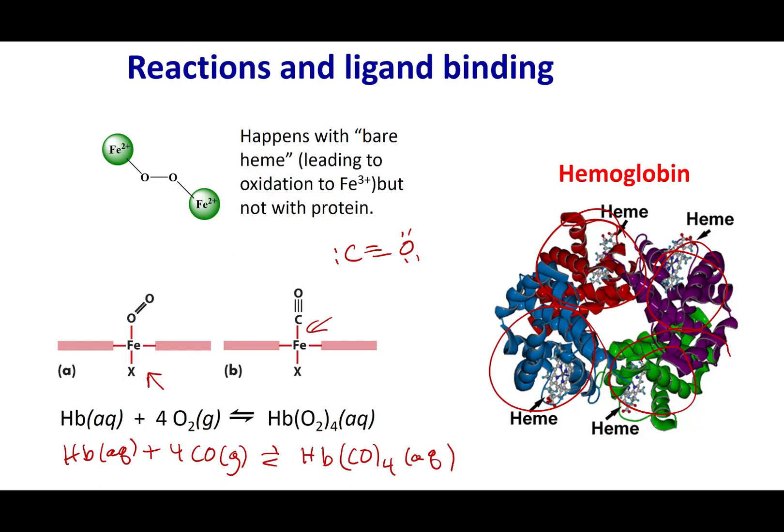If that's the case, we have another equilibrium with carbon monoxide. Now the problem is, is this equilibrium is 200 times stronger than that of oxygen. So what happens is once that carbon monoxide attaches to your hemoglobin, it doesn't want to let go.